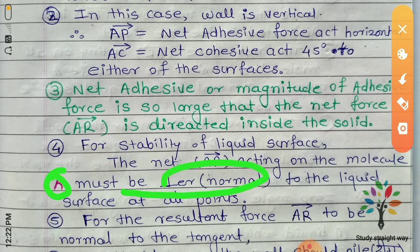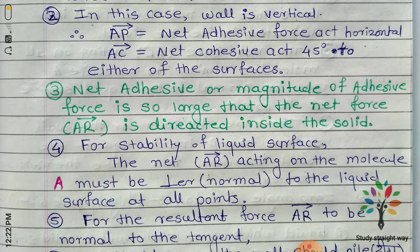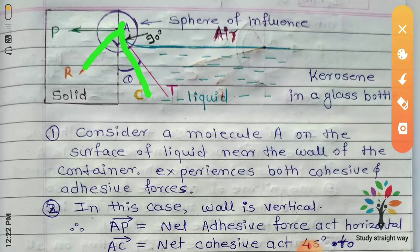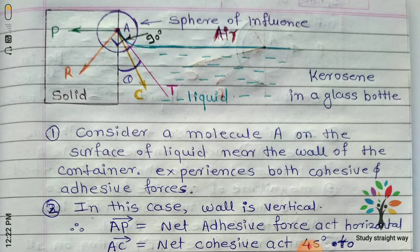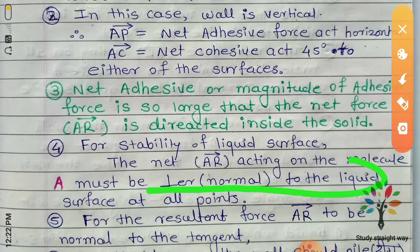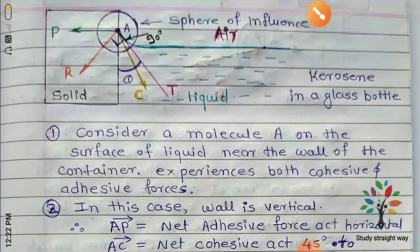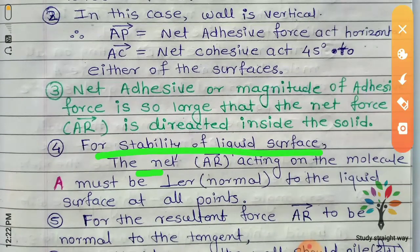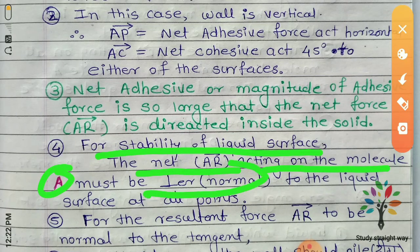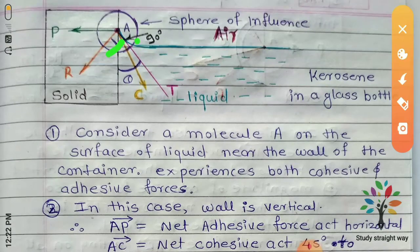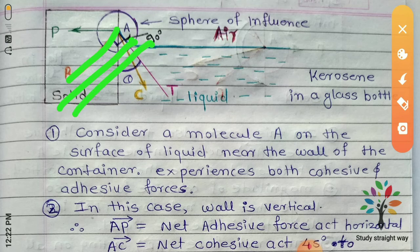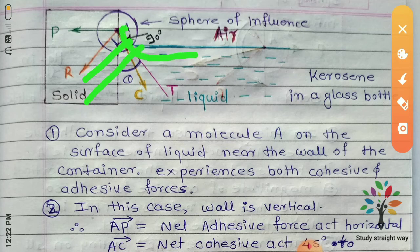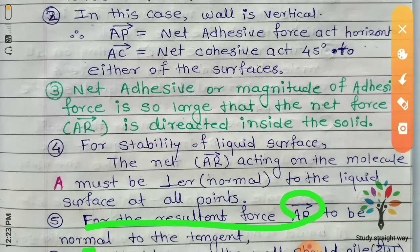For the stability of the liquid surface, the net resultant force AR acting on molecule A must be normal — perpendicular — to the liquid surface at all points. That is the angle of contact condition: AR must be perpendicular to the liquid surface at every point. So in this case, the surface will form a concave shape.